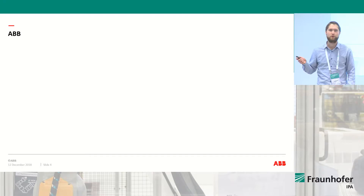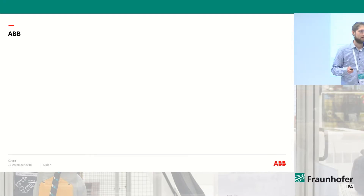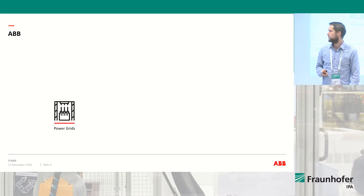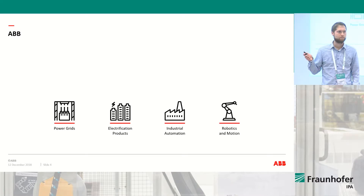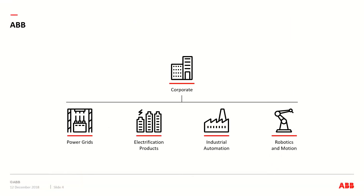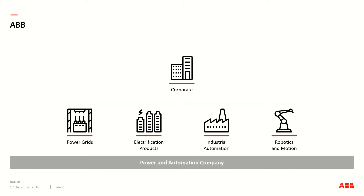A few words about ABB. There are four business units: power grids, electrification products, industrial automation, and robots and motion. Over these is the corporate part, where corporate research exists. Corporate research is a middle ground between university and industry, and we support the different business units with various things. All in all, ABB is a power and automation company.